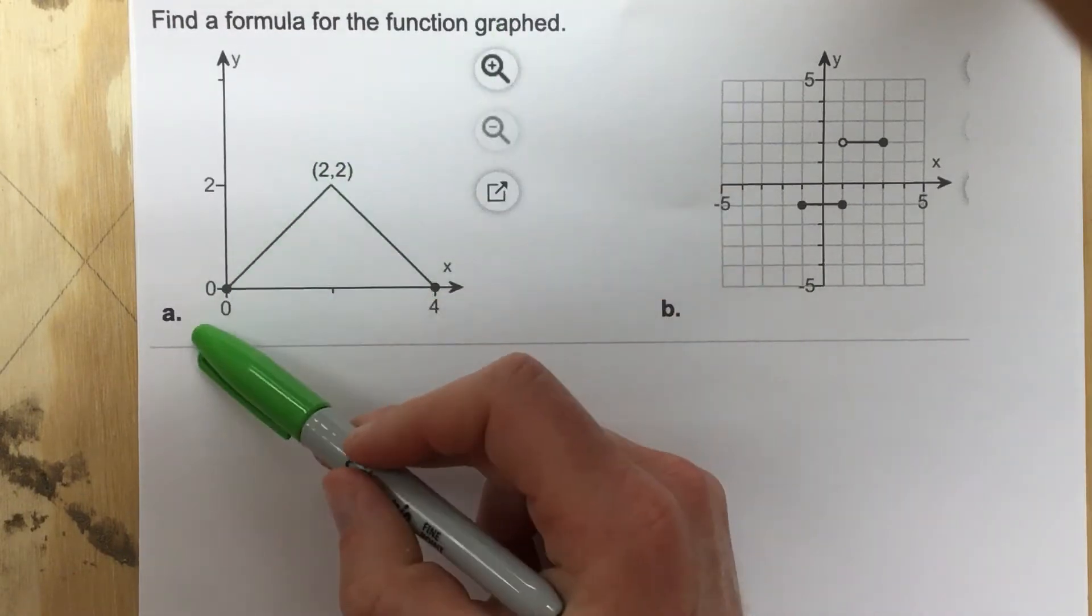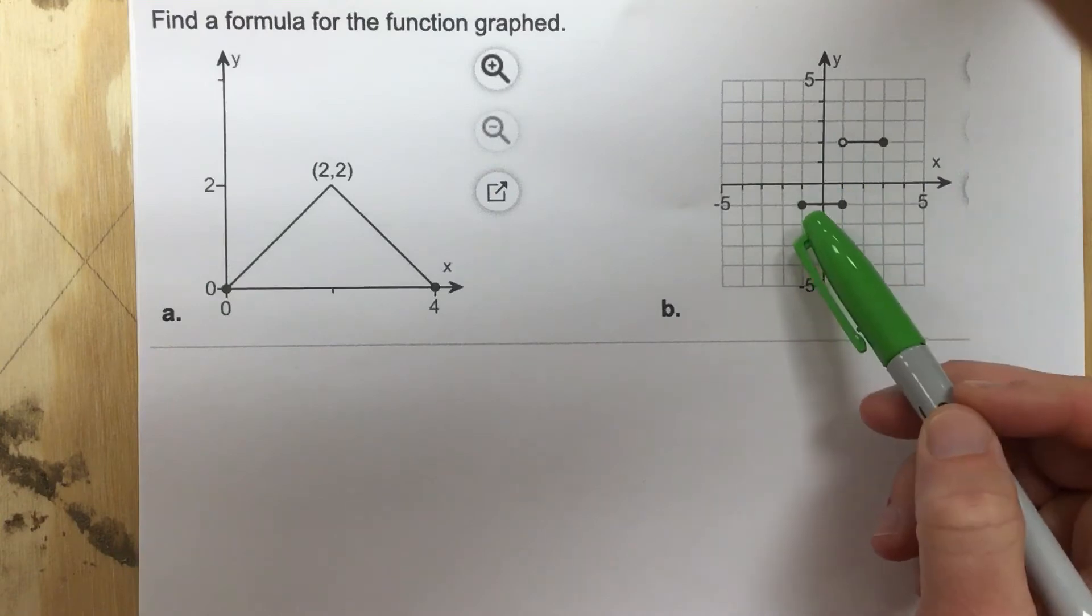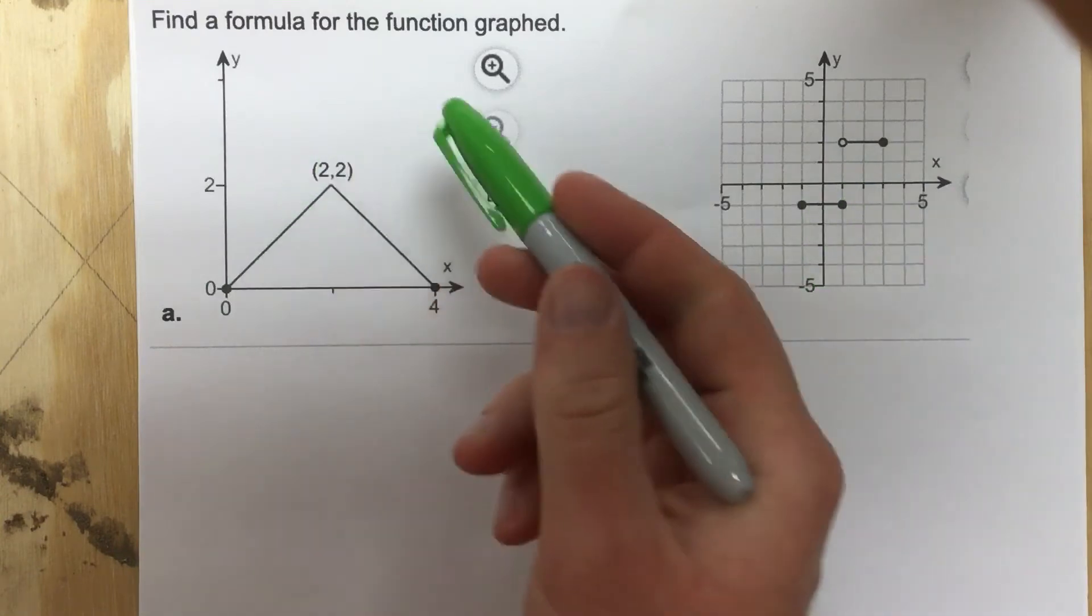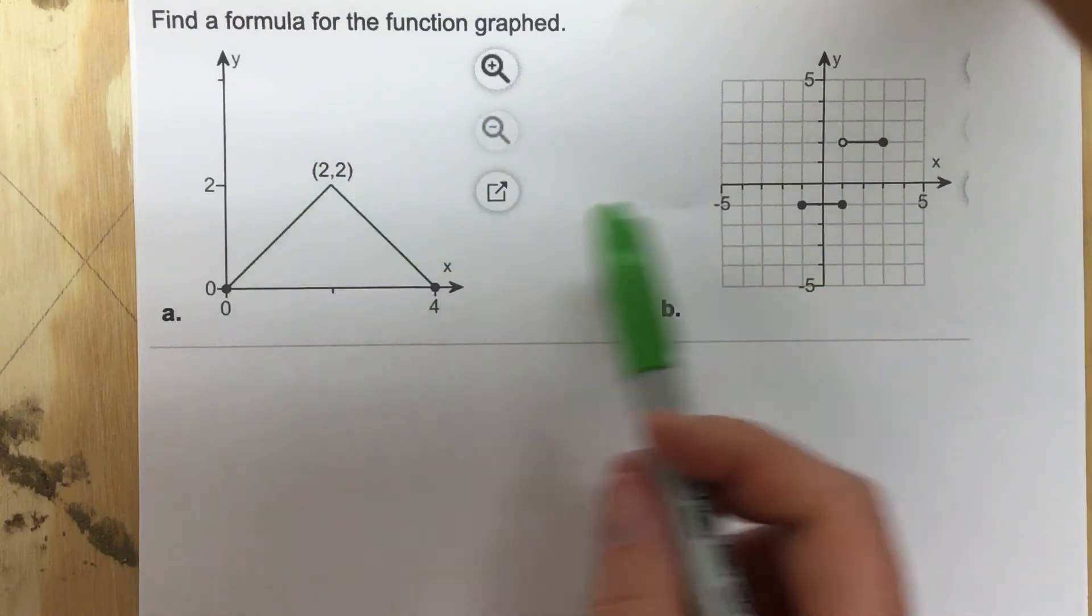They give you one function here in part A, another function in part B. They want you to find a formula for the function. You can see that these are piecewise functions.